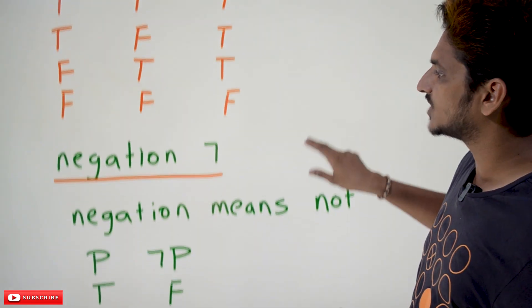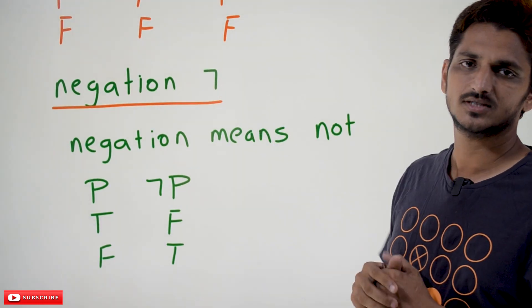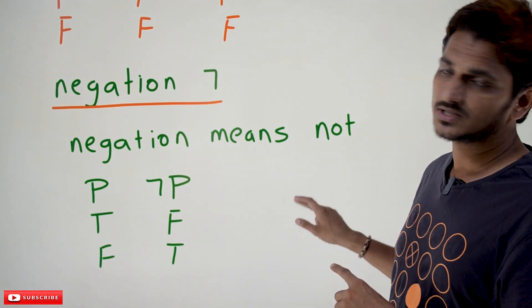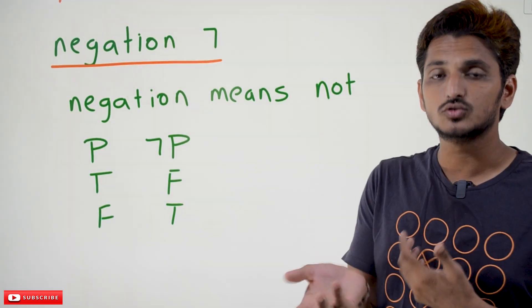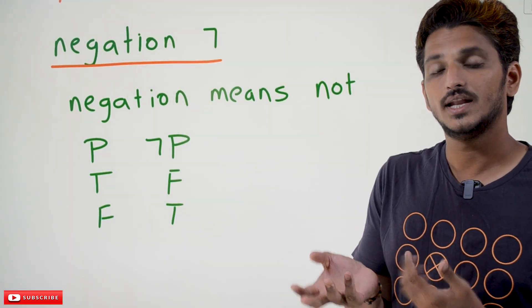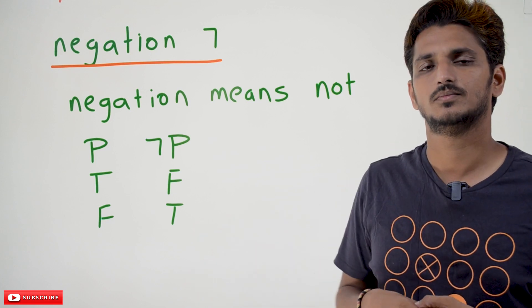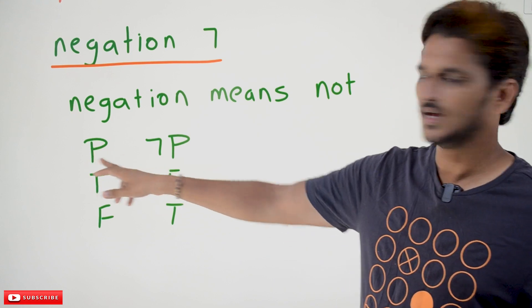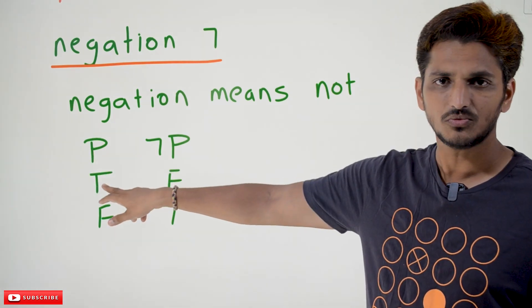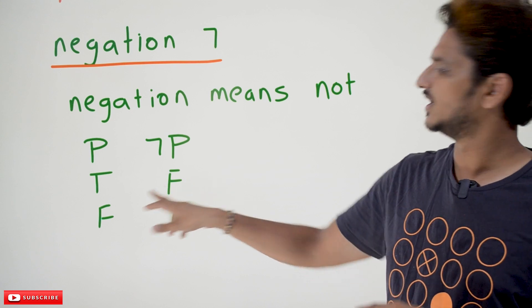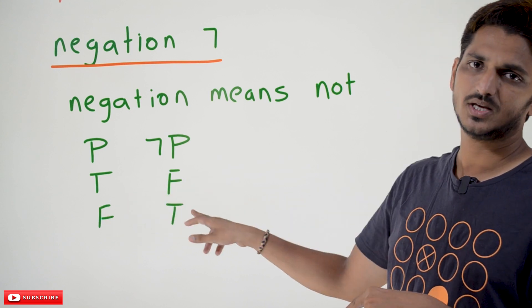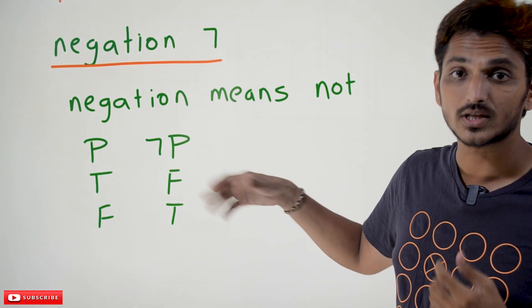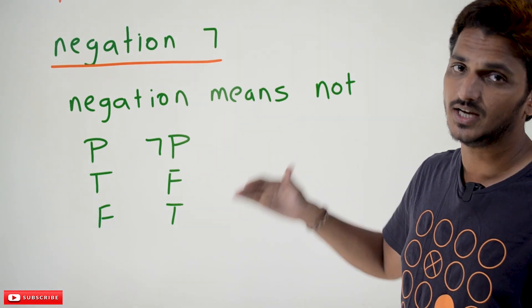Now coming to the negation part. The negation symbol is ¬. Negation means 'not.' For example, 'I went to school' — negation means 'I did not go to school.' In propositional logic: if P is true, negation P (¬P) is false. If P is false, negation P is true. These are the truth tables we use for the connectives conjunction, disjunction, and negation.